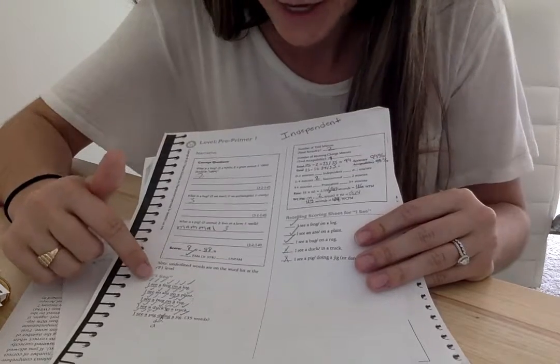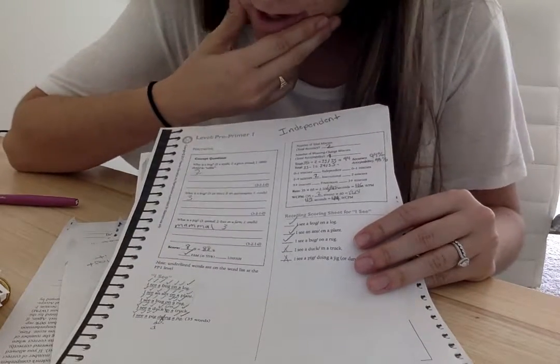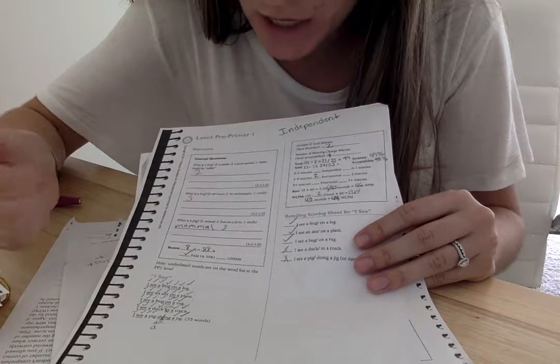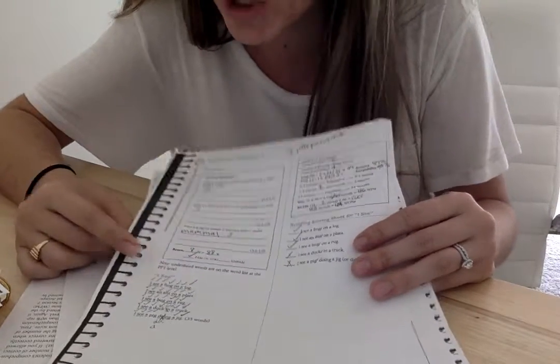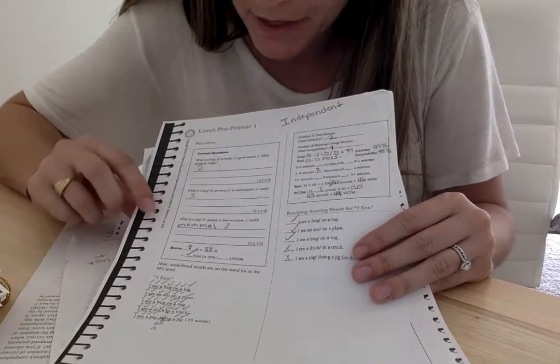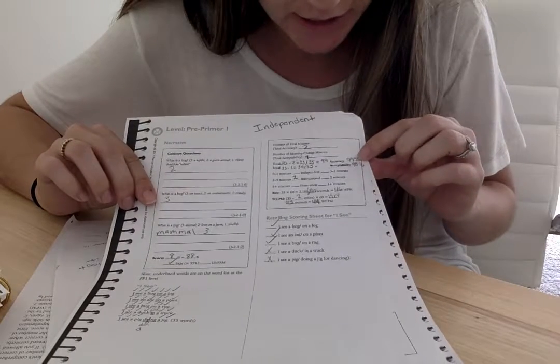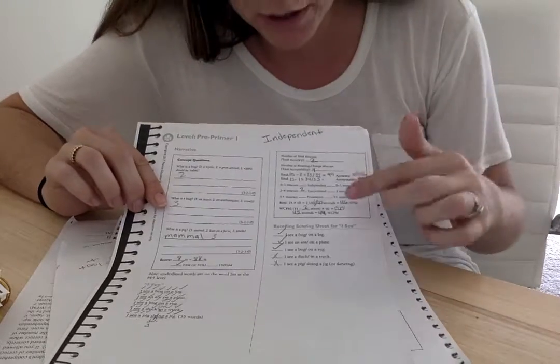The running record, he did well. He missed, he had a total of three mistakes throughout it. He said 'and' instead of 'a' one time. For 'doing,' he couldn't identify that word. So he just kind of said like 'duh, duh, duh, duh,' and like left it just like 'duh, jig.' Which was fine. So with all of those, he was able to score on this one a 98% accuracy, which was really good.